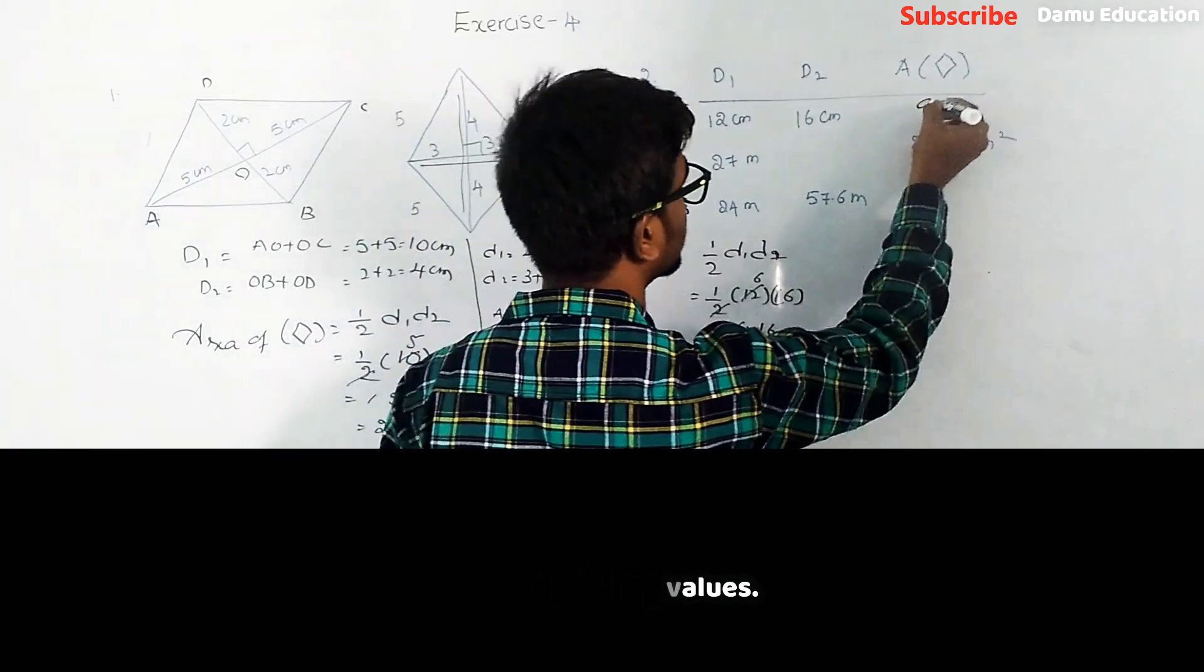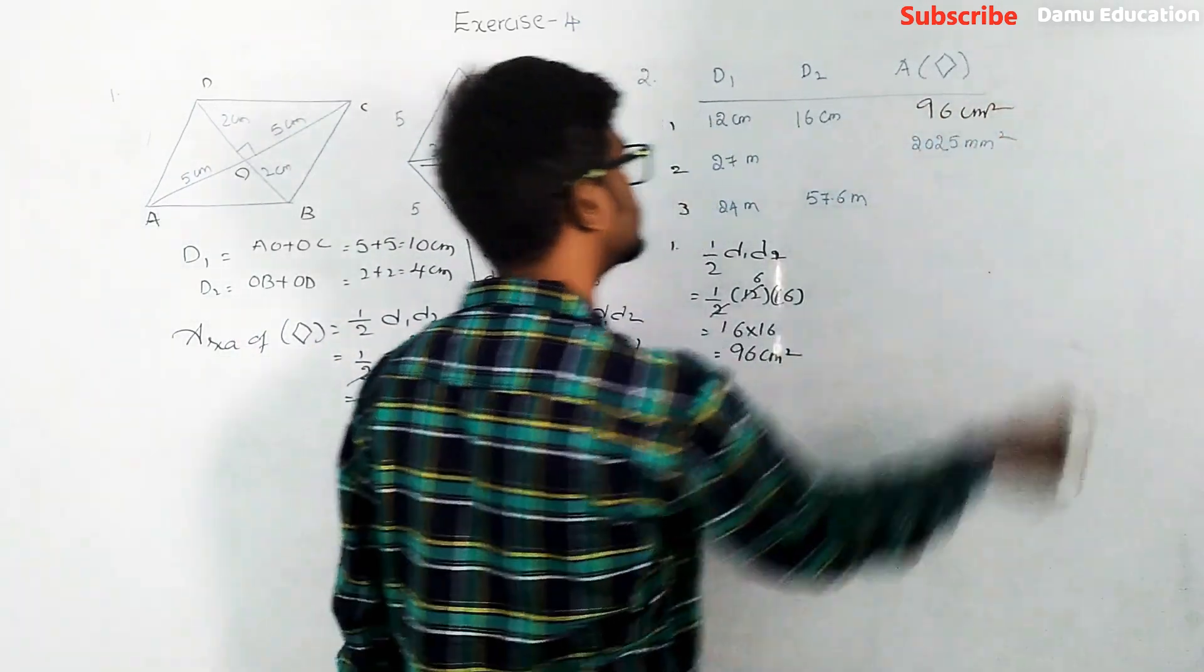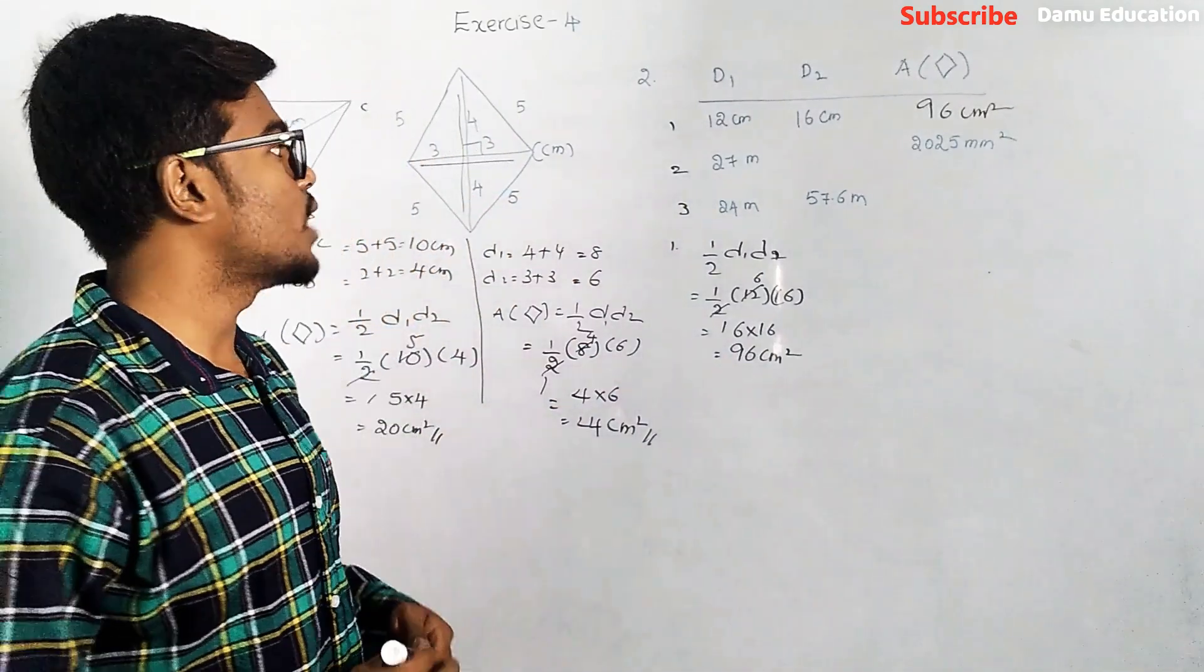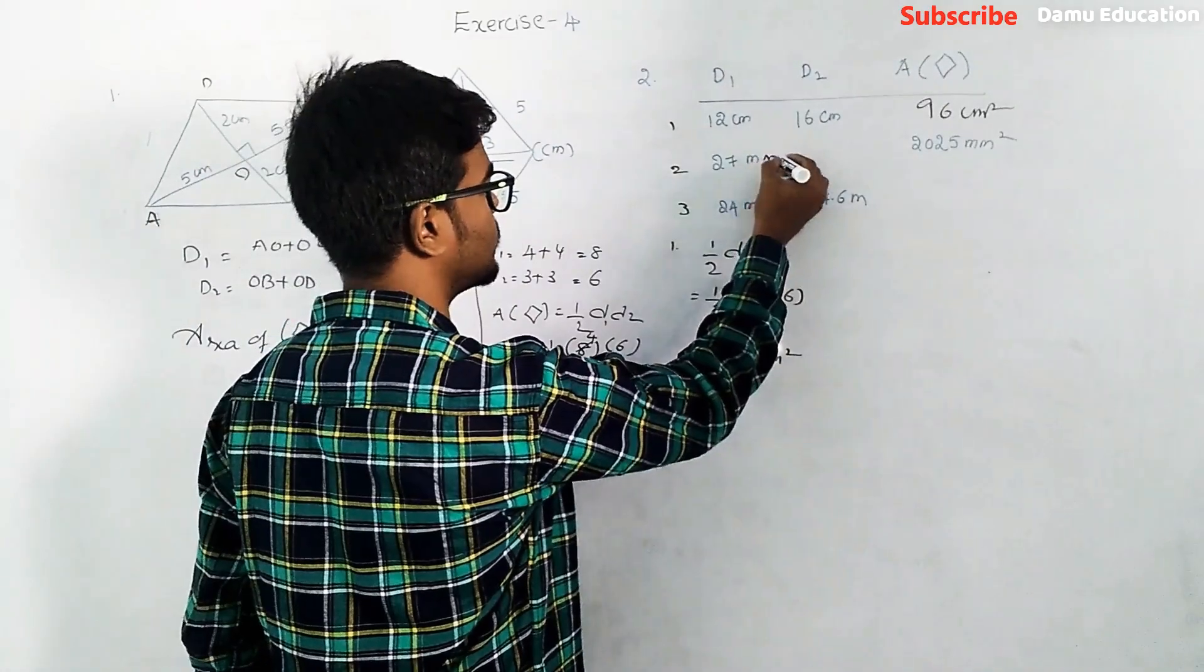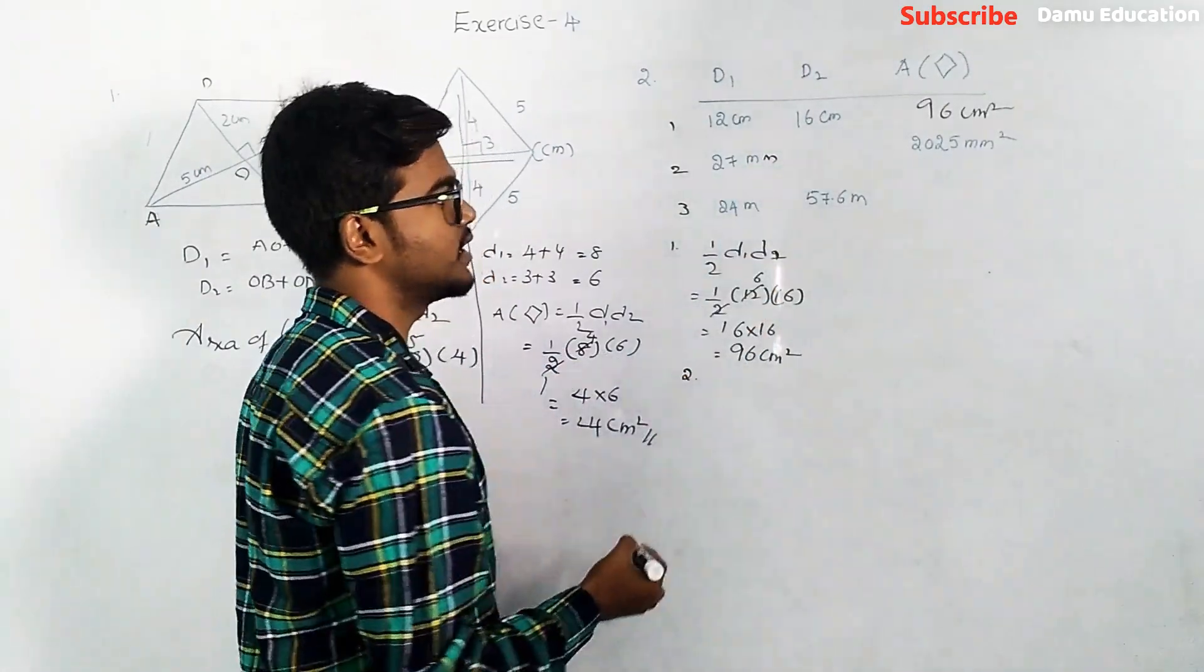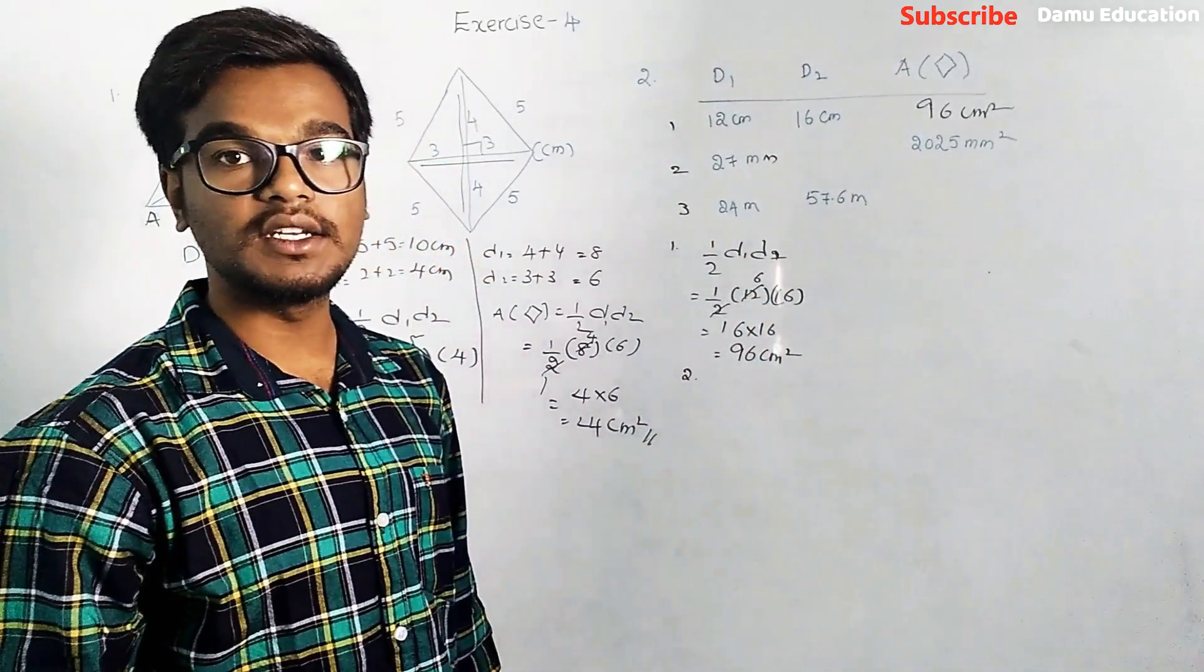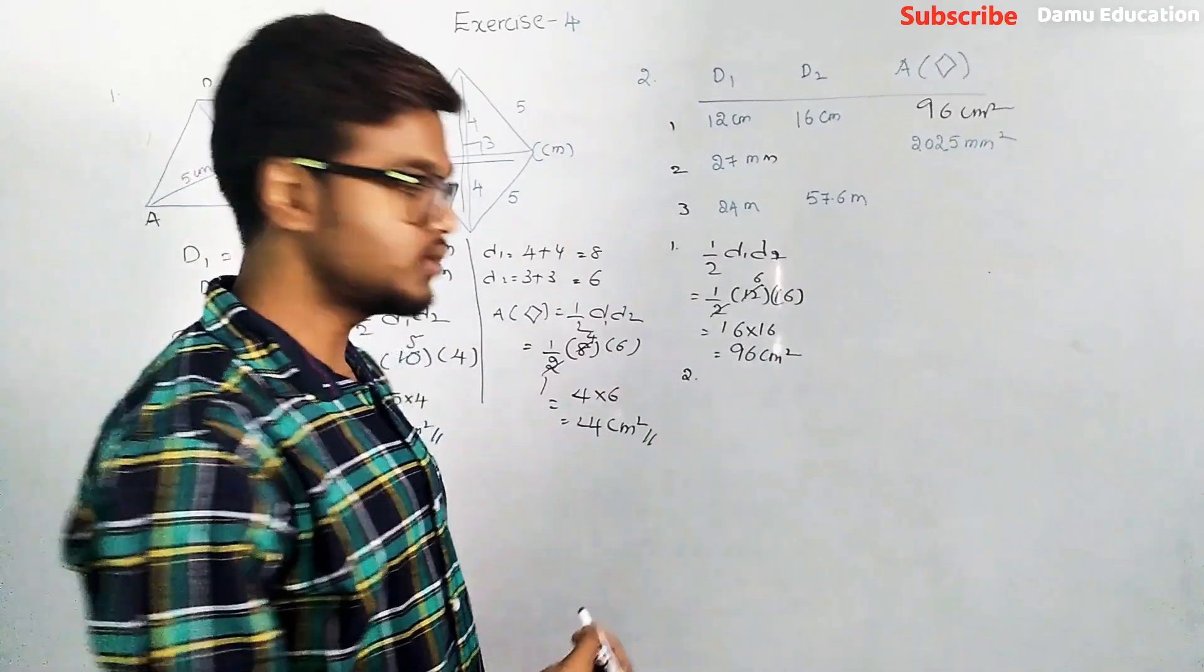Second one - they are given d1 as 27 mm and d2 we have to find. Area also is given.